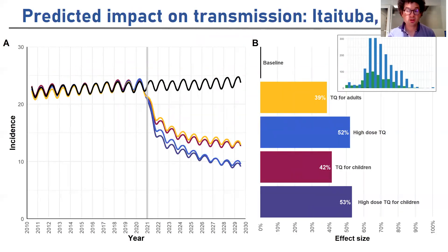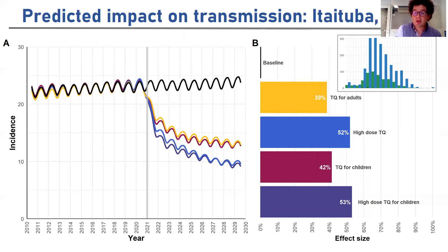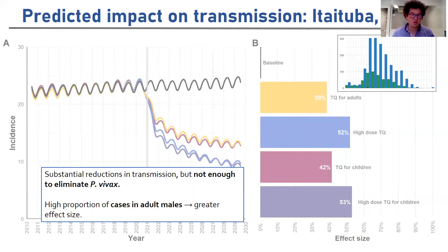Turning to our moderate transmission setting in Pará, if we introduce tafenoquine in 2021, after five years we have an estimated effect size of 39% — much more substantial. Higher dose tafenoquine would of course give a greater effect size. In this particular setting, expanding into children isn't going to be as effective because of the high proportion of cases that are in adults. However, even with this very large effect, we predict that it's still not enough to eliminate vivax. In cases where there's a high proportion of cases in adult males, we would predict that tafenoquine will have a greater effect size.